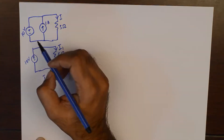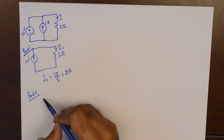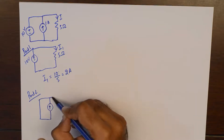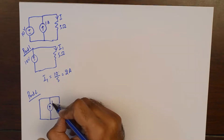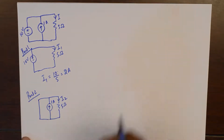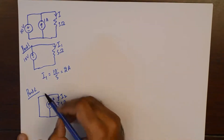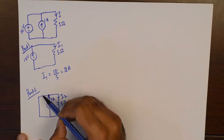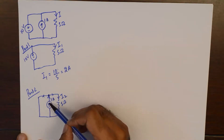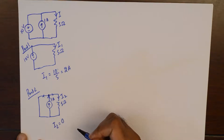That is part 1 of the question. In part 2, we short the voltage source and find the current in the 5 ohm resistor due to the 1 ampere current source. The current flows to a node where it has two branches — one branch offers zero resistance because the voltage source is shorted. So all of the current flows through that zero-resistance branch and I2 will be zero. This is the tricky part.